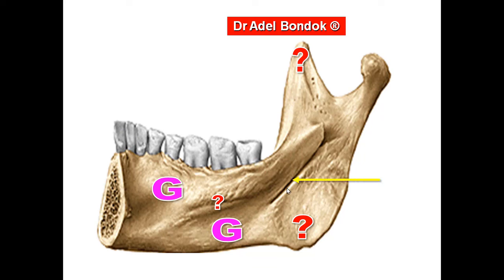This is the mylohyoid groove, which transmits the mylohyoid nerve and vessels. The nerve to mylohyoid supplies the mylohyoid muscle and the anterior belly of the digastric muscle. The groove near the last molar is where the lingual nerve passes — this is a clinically dangerous position.